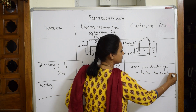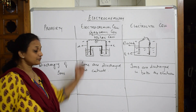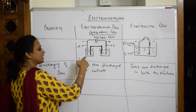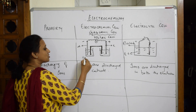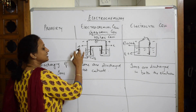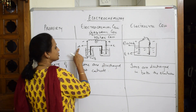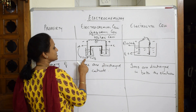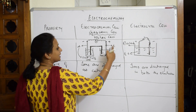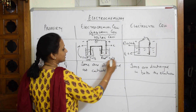Now let's write the cell reactions. In a galvanic cell, the anodic compartment is called the oxidation half cell, because oxidation always occurs at the anode. The cathodic compartment is called the reduction half cell, because reduction always occurs at the cathode.